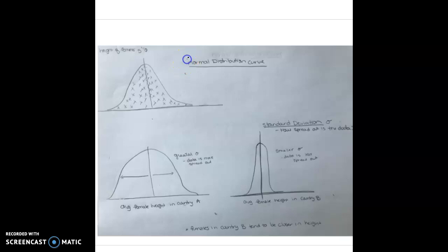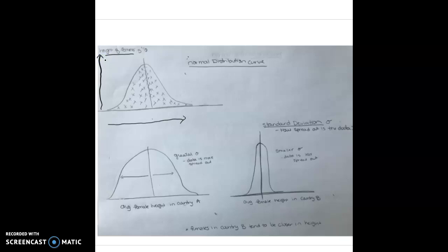The first one is going to be this normal distribution curve. What you see here is an x-axis and a y-axis. Along it, this is the height of females in the United States. As we go right on our axis, we are getting taller and taller. And as we go up on our y-axis, this is the number of females. Right in the middle is 5'6". So this is our mean, and our normal distribution curve is signified by this bell curve right here.